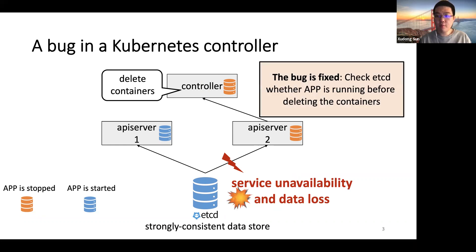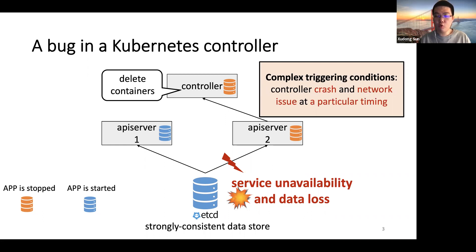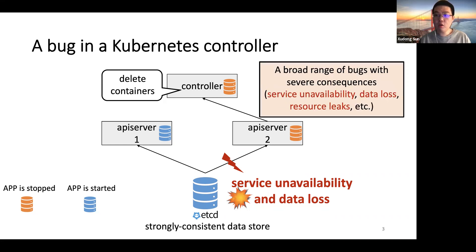The unexpected deletion caused severe consequences like service unavailability and data loss. This bug has been fixed by checking ETCD whether the application is still running before deleting the containers. But the triggering conditions are complex — it requires a controller crash and network issue to happen at a particular timing, which makes the bug difficult to detect during testing. We also observe a broad range of bugs similar to this one, caused by inconsistent views with severe consequences like service unavailability, data loss, resource leak, and so on, in many different systems.